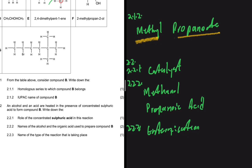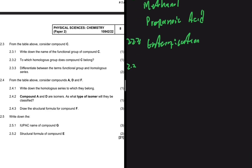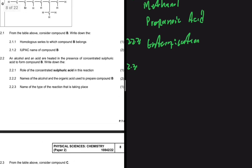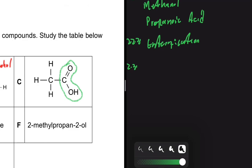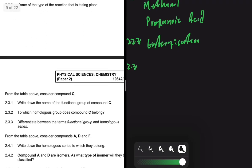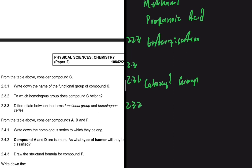Moving to 2.3, we consider compound C. Compound C has the functional group of an acid — ethanoic acid to be specific. For question 2.3.1, the name of the functional group of compound C: since compound C is an acid, the name of the functional group is the carboxyl group. For 2.3.2, the homologous series to which compound C belongs is carboxylic acid.